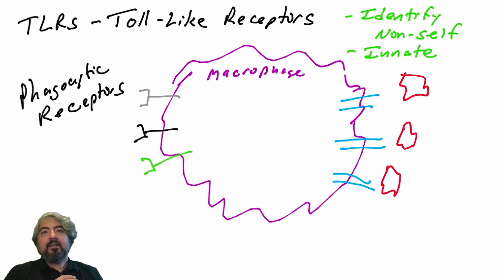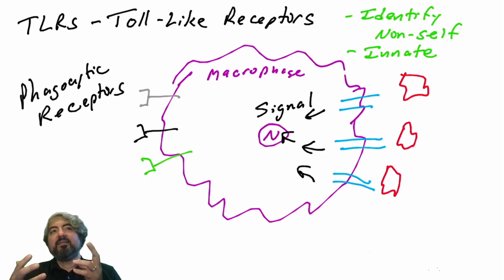These receptors have ligands, and many of these ligands are molecules that are found on the surface of pathogens or released by pathogens. When the phagocyte, for example in this case the macrophage, binds to its ligand—these non-self molecules—that's going to send a signal into the cell through intracellular signaling all the way to the nucleus.